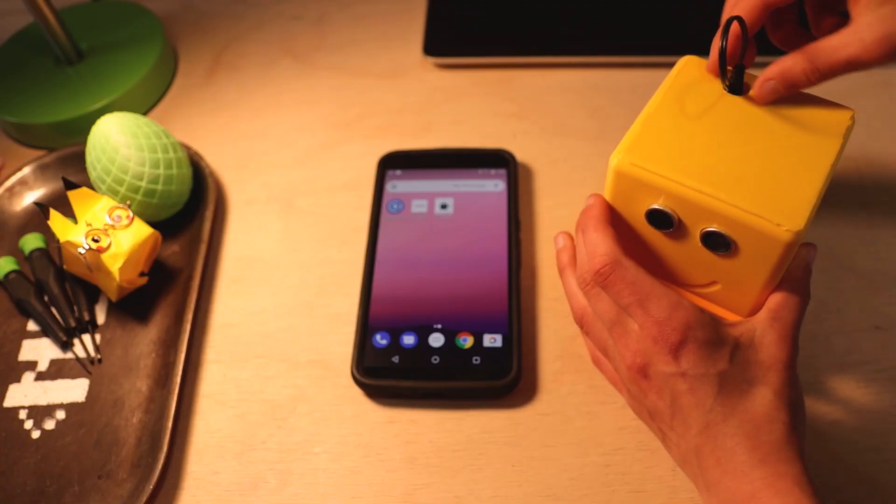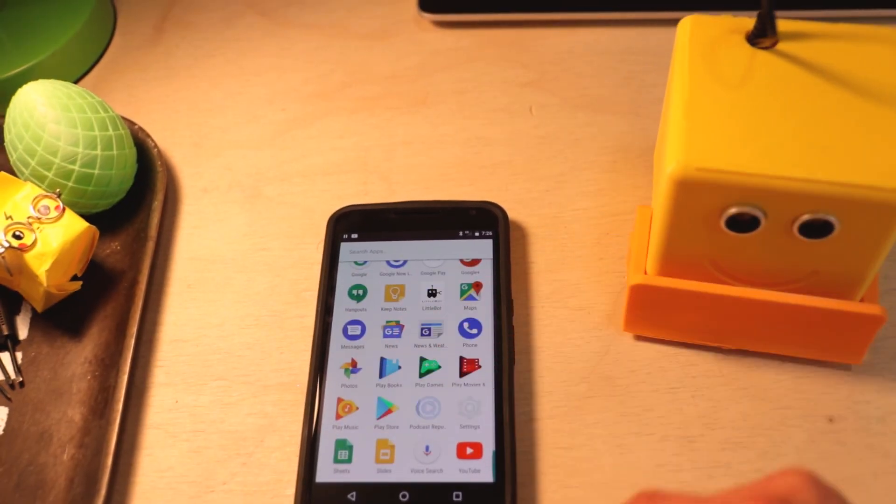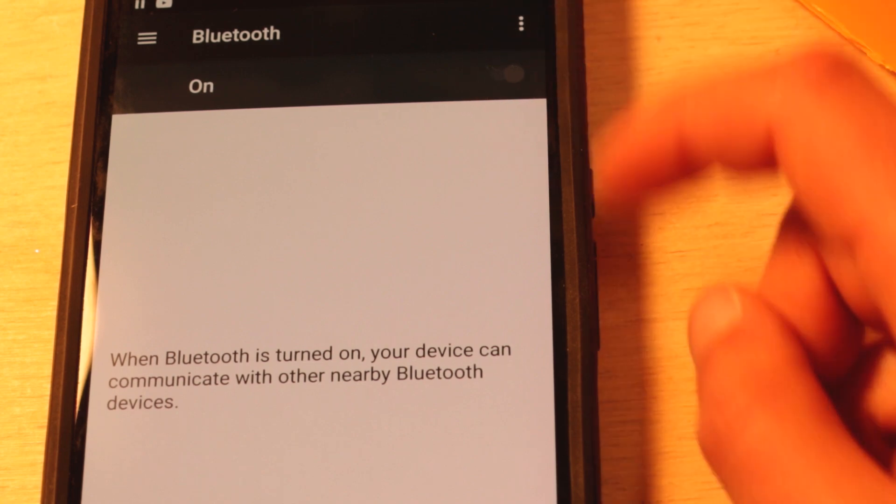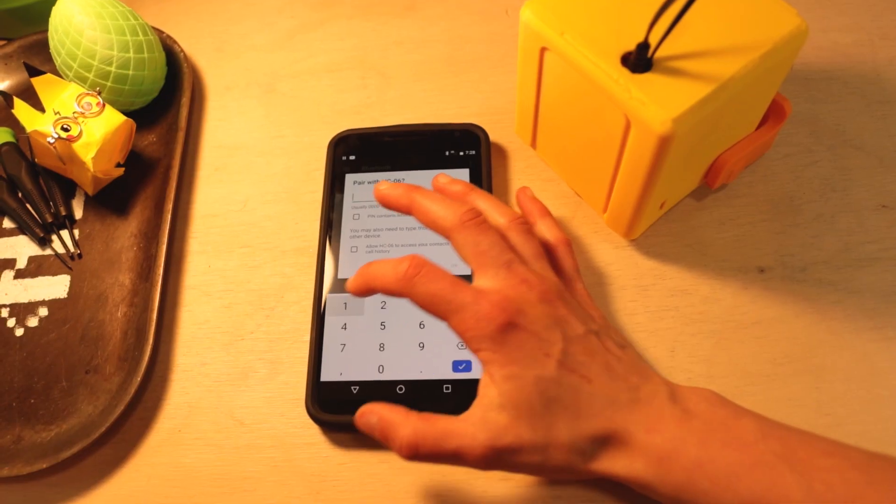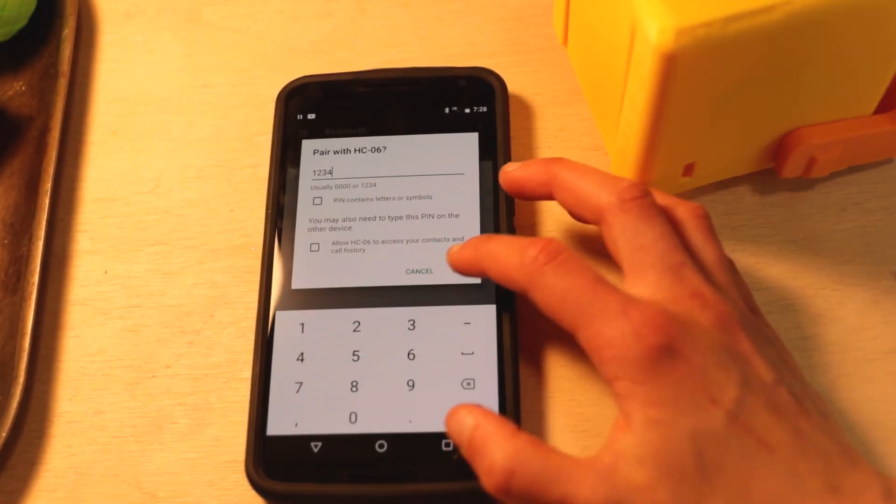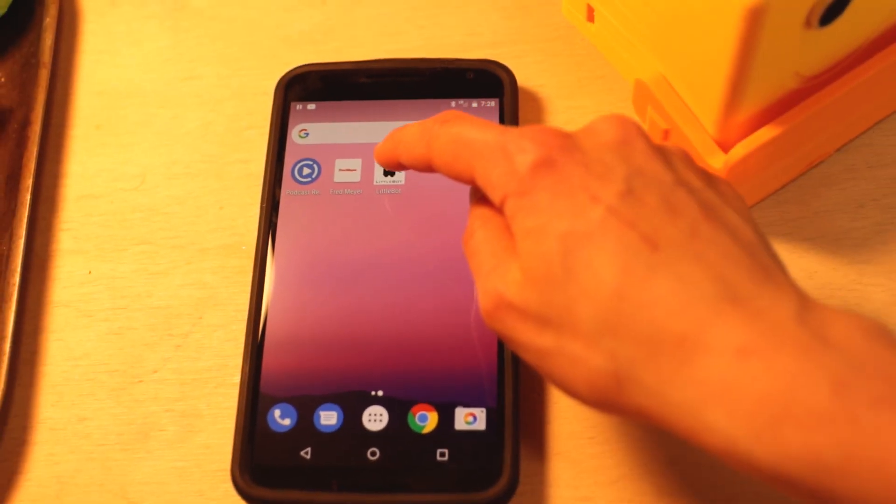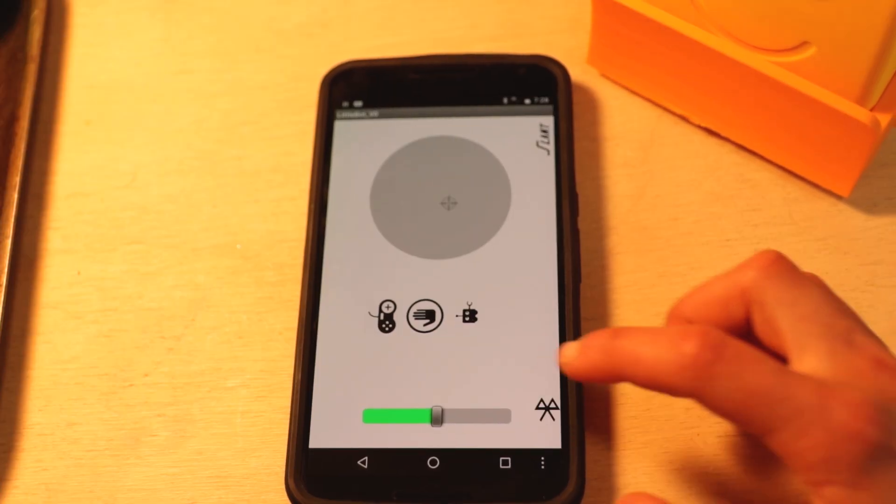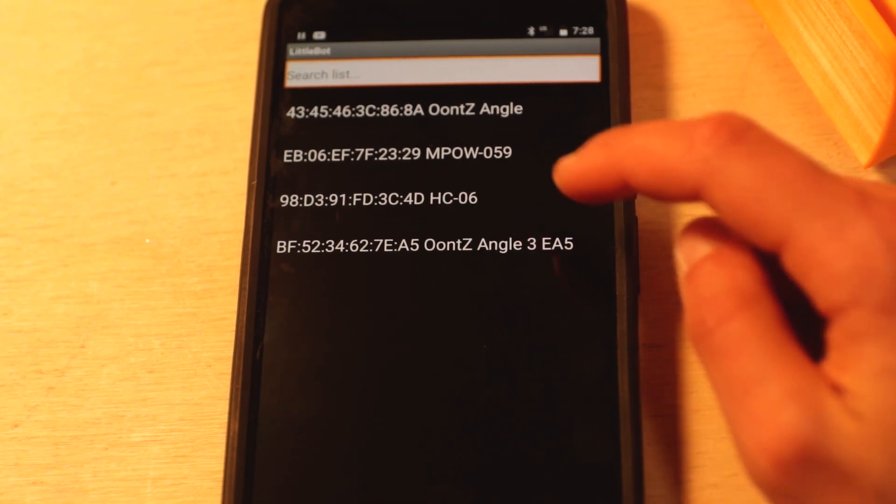Don't forget to reattach that precious little Bluetooth module after you're done uploading code. Now that the code lives on the Arduino, we need to pair the robot to the app on our phone. Make sure Little Bot is on, turn on Bluetooth on the phone you're using, and pair the phone to the HC06 Bluetooth module. It might ask for a password, which should just be 1234. Once it's all set, get yourself to the Little Bot app and hit that Bluetooth icon. Select the correct Bluetooth module and wait until the app returns to the home screen.